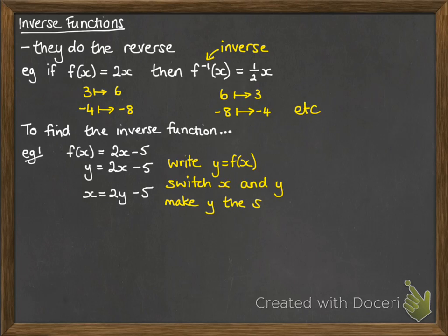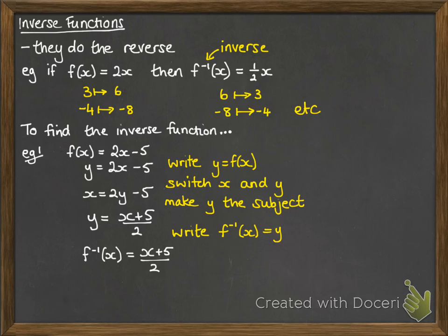Then you need to rearrange to make y the subject once again. There we have the main bones of the inverse function. We just need to write it in the proper format. So we write that f⁻¹(x) is whatever we have y to be here. So f⁻¹(x) = (x + 5)/2.